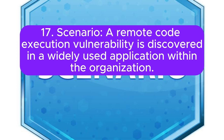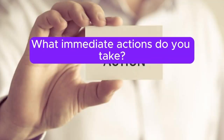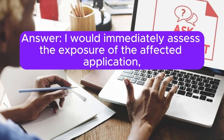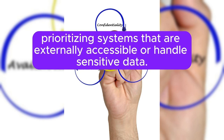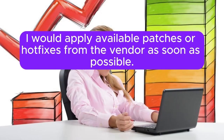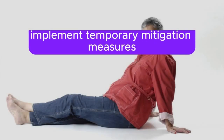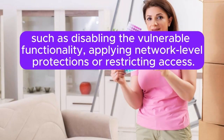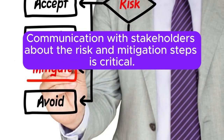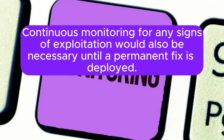Scenario 17: A remote code execution vulnerability is discovered in a widely used application within the organization. What immediate actions do you take? I would immediately assess the exposure of the affected application, prioritizing systems that are externally accessible or handle sensitive data. I would apply available patches or hotfixes from the vendor as soon as possible. If no patch is available, I would implement temporary mitigation measures such as disabling the vulnerable functionality, applying network-level protections, or restricting access. Communication with stakeholders about the risk and mitigation steps is critical. Continuous monitoring for any signs of exploitation would also be necessary until a permanent fix is deployed.